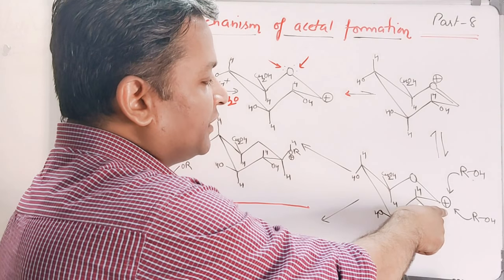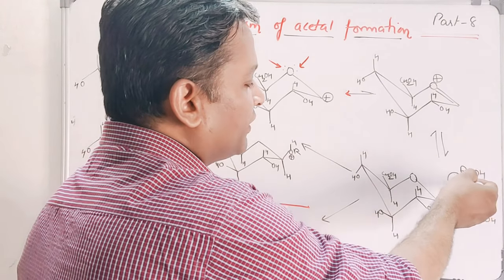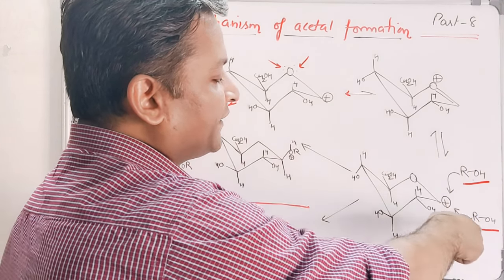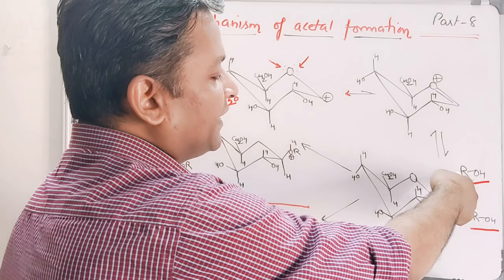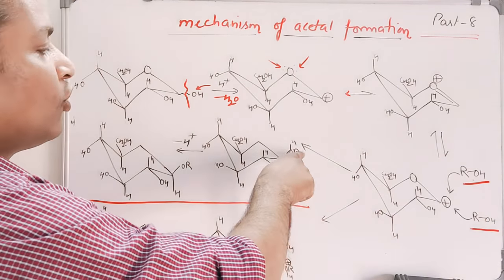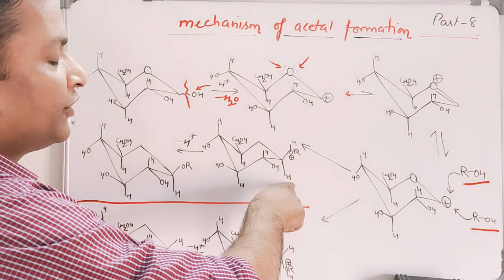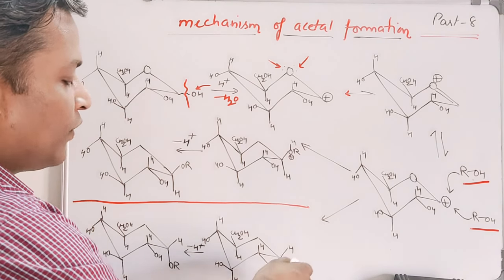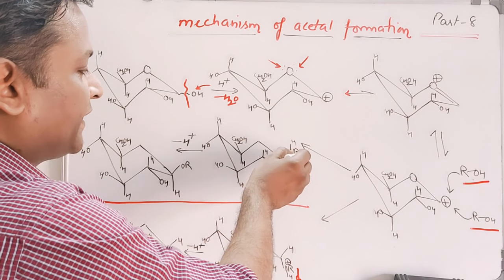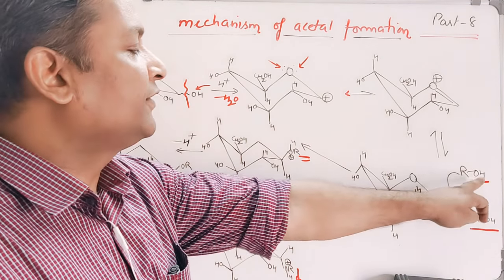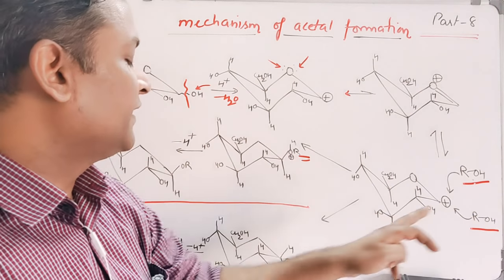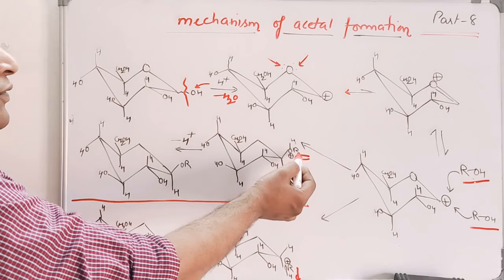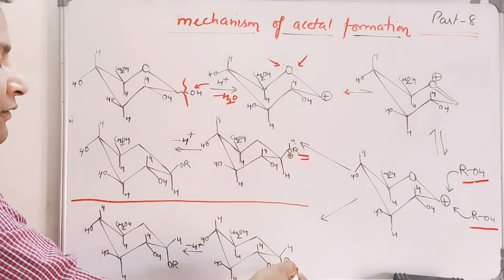After this, the carbocation can be attacked by an alcohol molecule. The alcohol molecule can attack the carbocation from the above side or from the lower side. If it attacks from the above side, we will have OR occupying the above side with H on the lower side. If it attacks from the lower side, we will have OR occupying the lower side and OH on the above side.